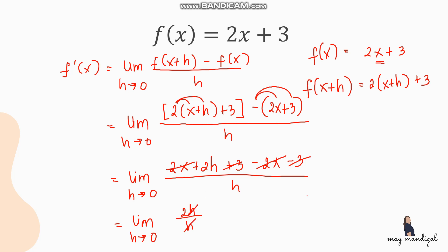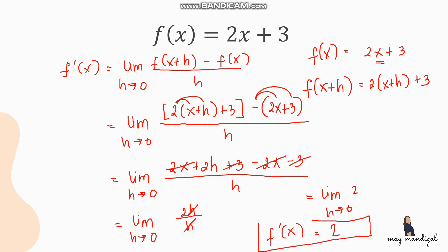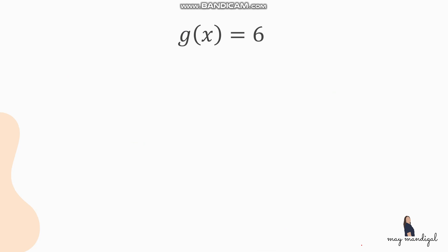We're left with the limit of 2 as h approaches 0. Since this is a constant, and the limit of a constant is the constant itself, the limit equals 2. So the derivative of the function 2x plus 3 using the limit definition is 2.